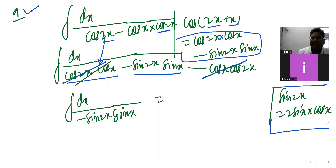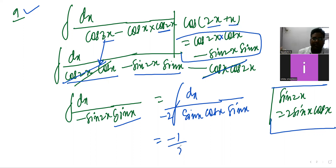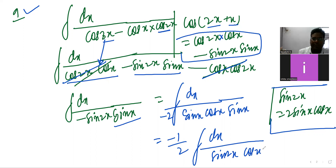Again use the sin2x expansion: sin2x = 2sinx·cosx. So the denominator becomes minus 2sinx·cosx·sinx, giving minus 1/2 integration of dx divided by sin²(x)·cos(x).